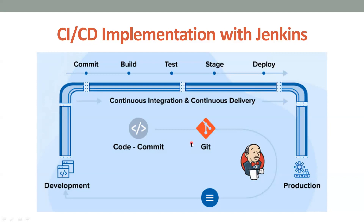If you're interested, you can go to my channel where there is a playlist called GitHub for Beginners. Git is a version control system — using Git we push our code into a repository. First we commit the code into Git, then we build it, test it, stage it, and deploy it into the specified regions, whether dev, QA, or production.